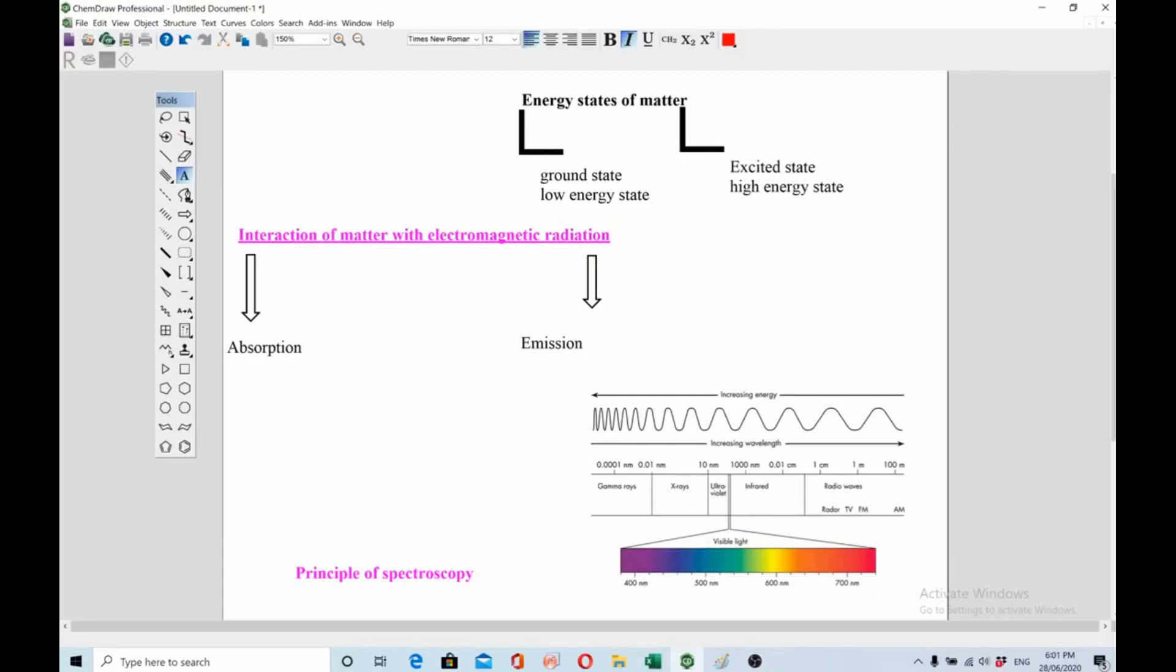UV starts from 400 to 10 nanometer and the X-rays region starts from 10 nanometer to 0.1 nanometer. From 0.1 nanometer to 0.0001 nanometer is gamma rays. If you go higher from 700, like from 1000 to 0.01 centimeter is IR infrared spectral region, and then you have radio waves and then you have NMR in that region.